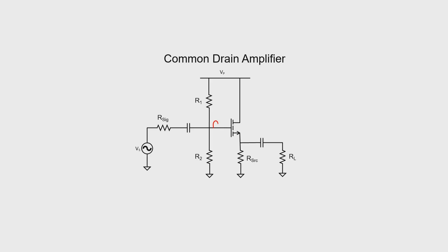Let's take a look at what happens as the input signal voltage swings high or low. Imagine that the voltage here at the gate starts to rise. That then causes the gate-source voltage to rise a little bit, which subsequently increases the drain current. As the drain current rises, it causes the source voltage to rise as well. How far can it rise?